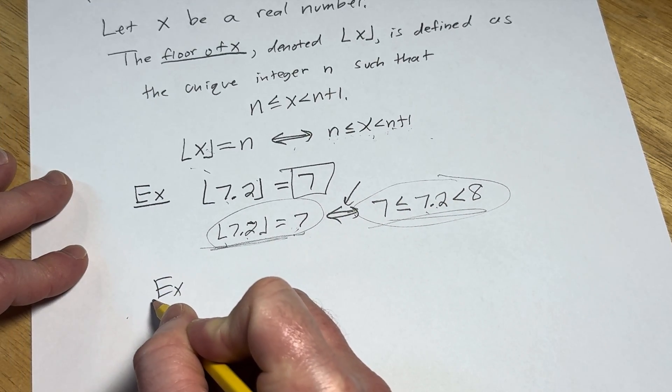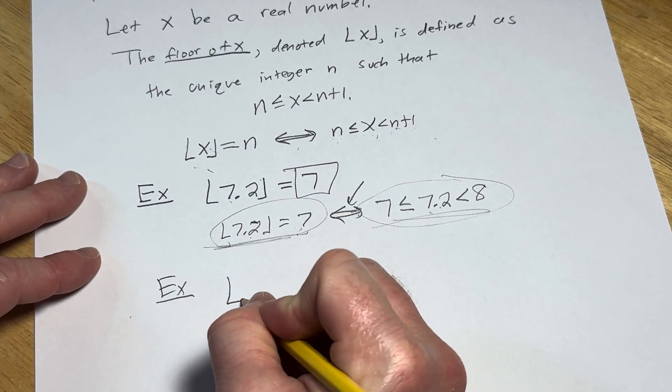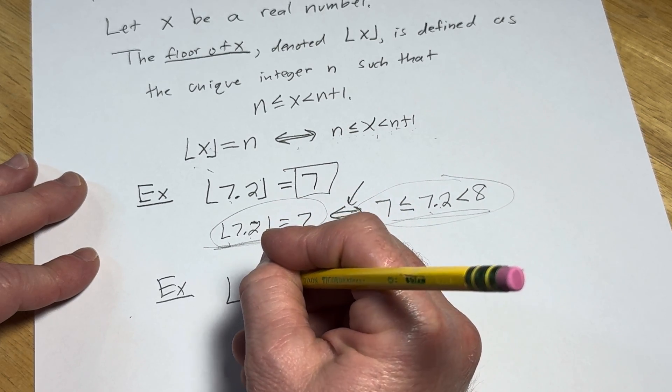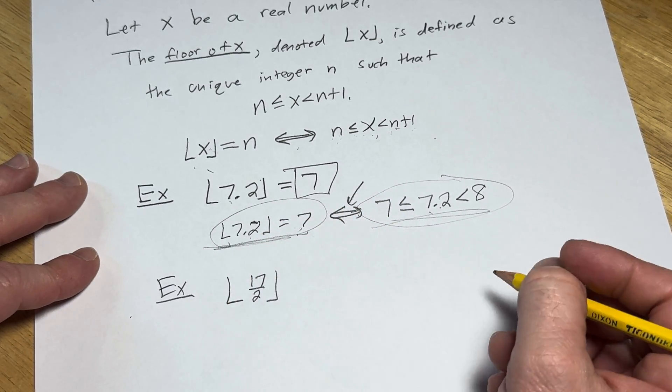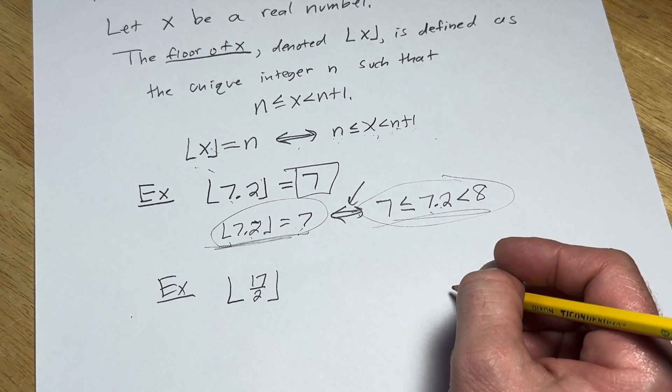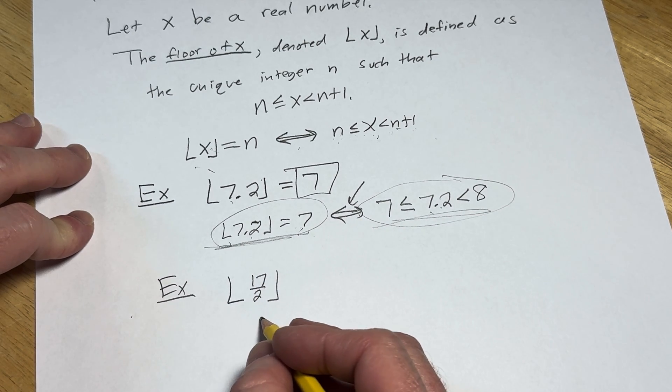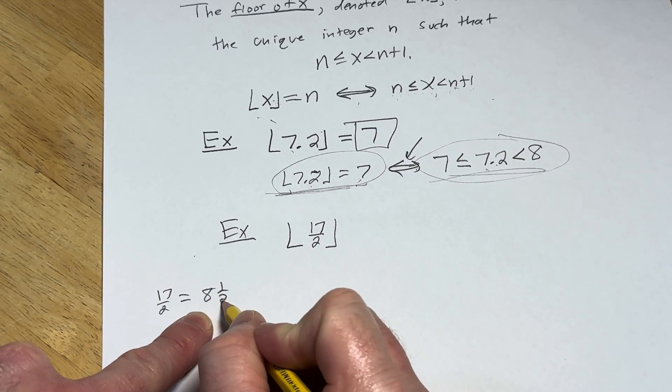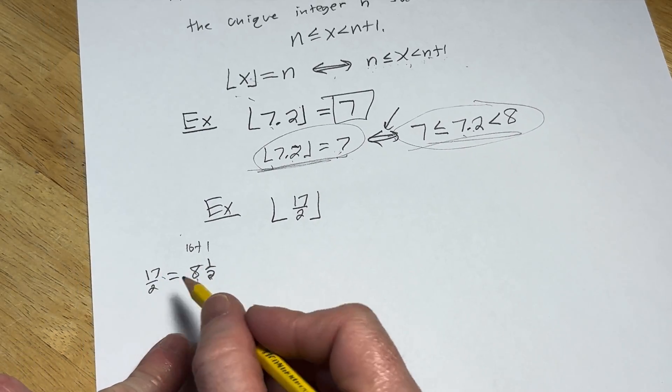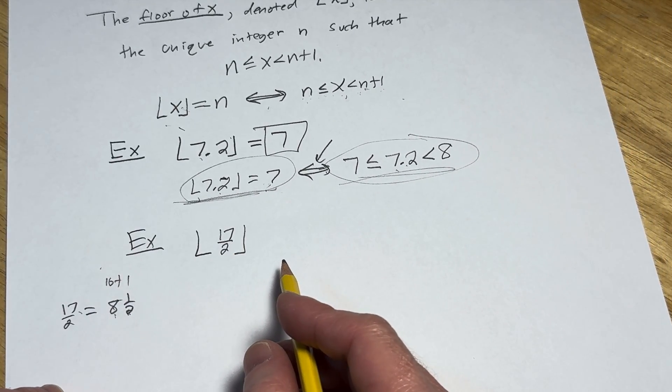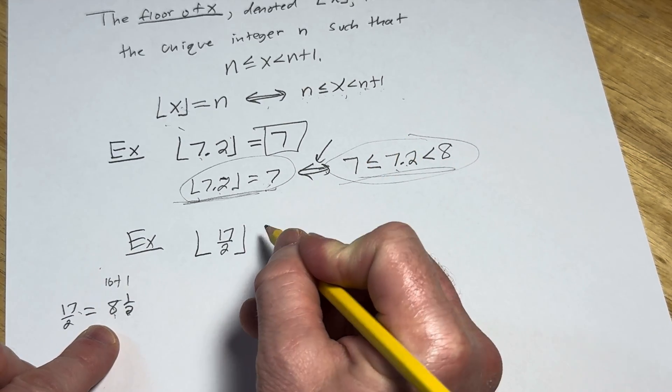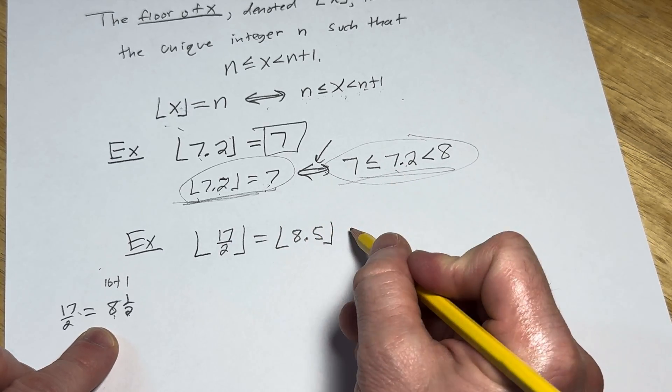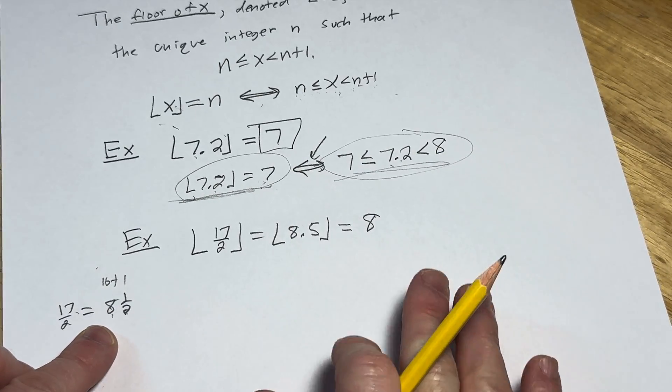Let's do another example. What if we had the floor of a fraction? What if we have the floor of 17 over 2? Well, 16 over 2 is 8, so 17 over 2 is actually 8 and a half, which is 8.5. And it's the floor function, so you bring it down. So this is going to be equal to 8. Always just bring it down every single time.